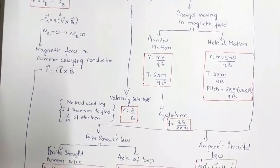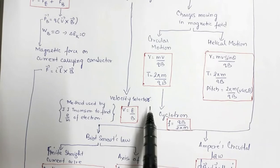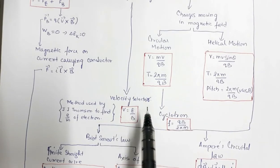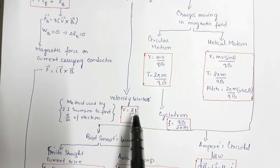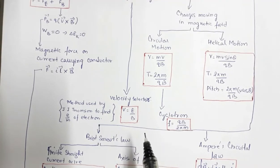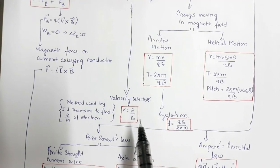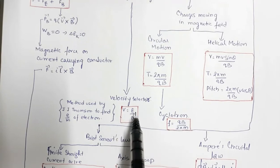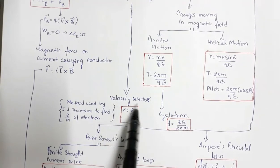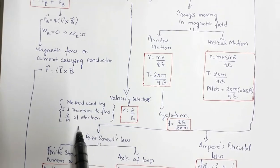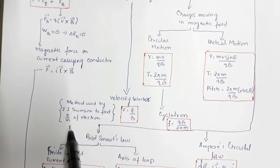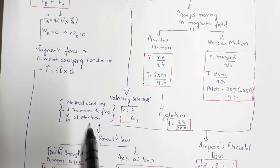Then we have the concept of the velocity selector, wherein the charged particle travels undeviated under the simultaneous influence of electric and magnetic fields. When the particle travels undeviated, the electric and magnetic forces balance, giving velocity v = E/B. This concept was used by J.J. Thomson to find the specific charge — that is, the charge-to-mass ratio — of electrons.